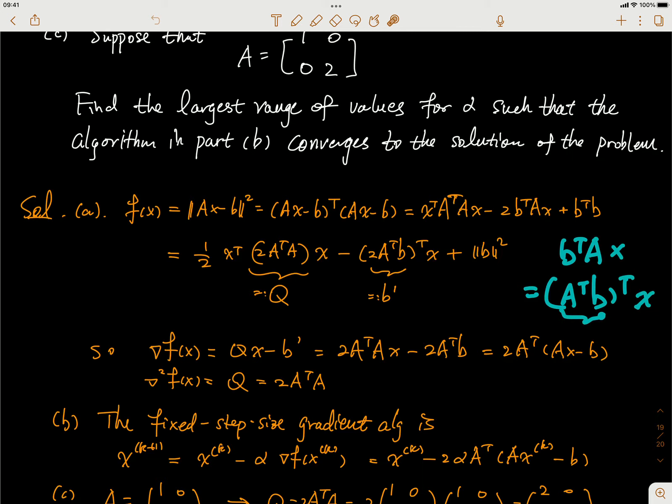So b^T Ax should equal (A^T b)^T x. This means that this term is essentially just the inner product of x and the vector A^T b, because A^T b here is a vector, same dimension as x.